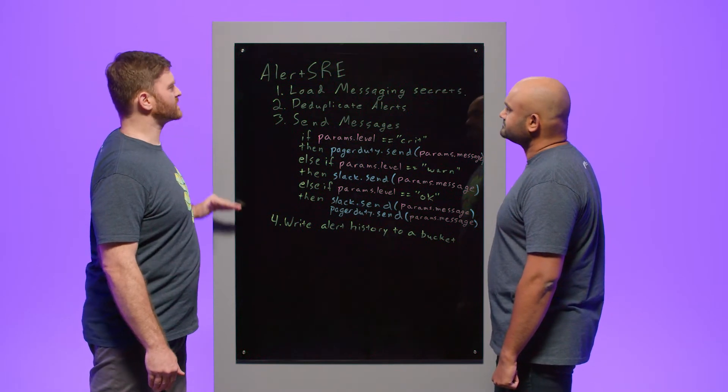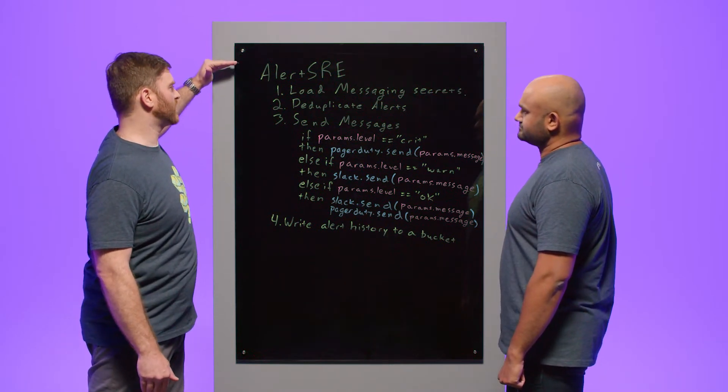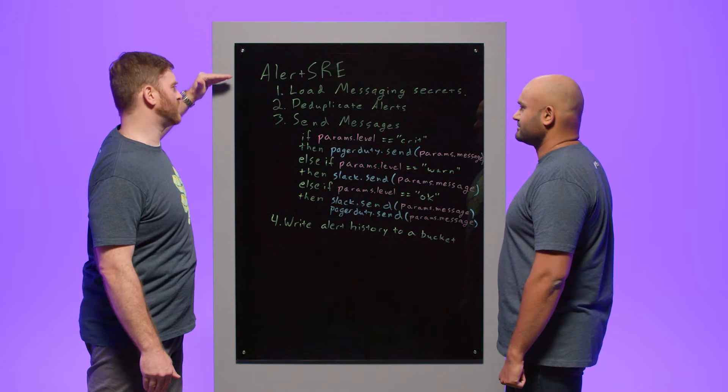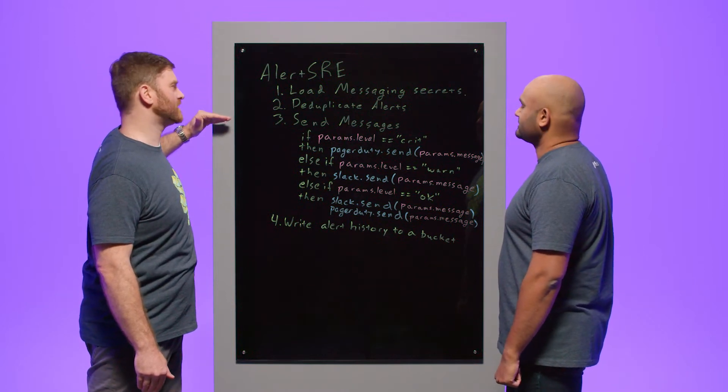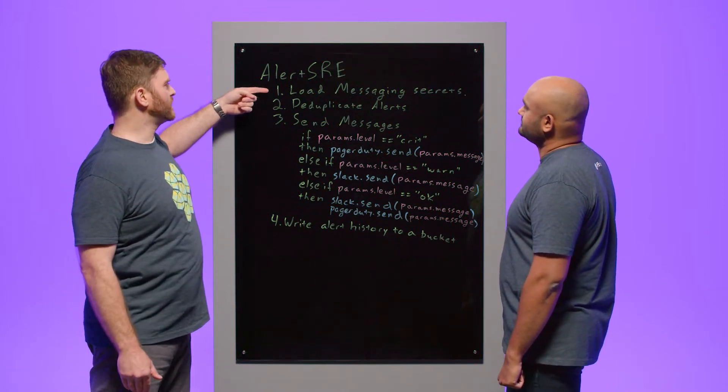In this case, this would be written in Flux, but to keep things brief, I just have the main points here of what we need to do in our script. So the first thing we do is load our messaging secrets. Okay, so you can save secrets on the platform? Yeah, this is great. So we have a Vault instance inside of our platform where we store the secrets securely. And then there's actually calls in the Flux language where you can extract those secrets.